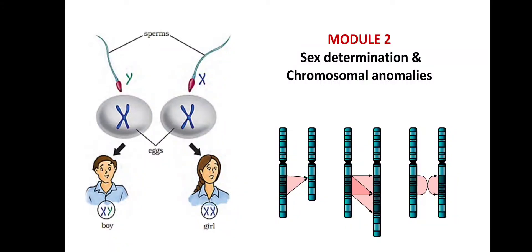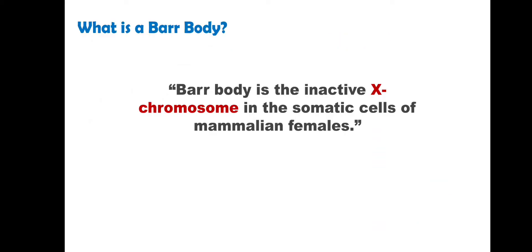Hi everyone, this video is the continuation of module 2. Next we are going to discuss about Barr body. So what is Barr body? Barr body is the inactive X chromosome in the somatic cells of mammalian females.